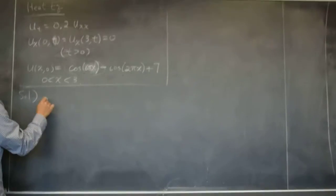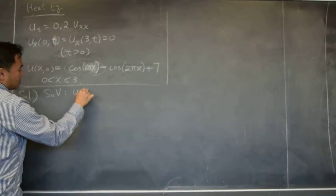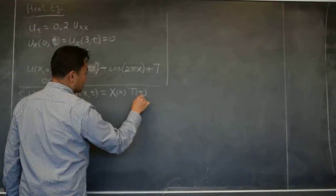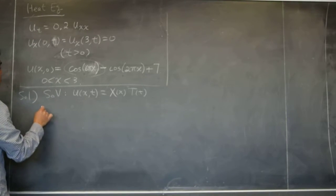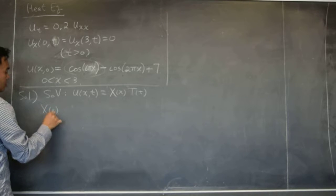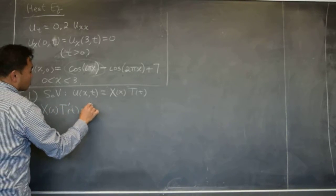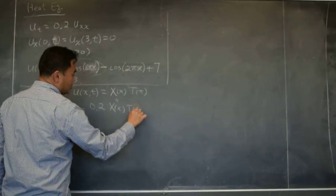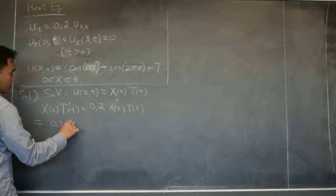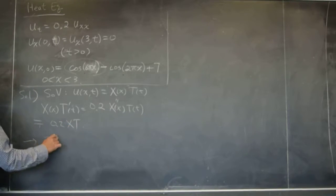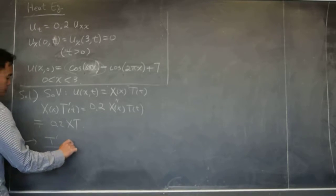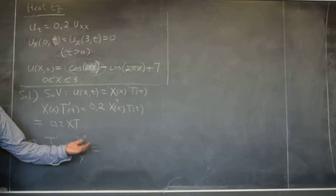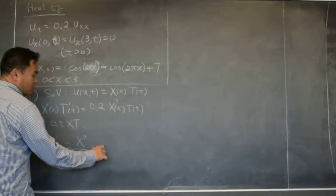Solution. Again, you start with the separation of variables. It says u(x,t) is a function of x times function of t. And then you plug it in here. It's X(x)T'(t) equals to 0.2 X''(x) and T(t). And if you divide everything by 0.2 XT, you get T' over 0.2T equals to X'' over X. And using that argument about a function of t equals a function of x, that has to be a constant. And we set this equal to negative λ.